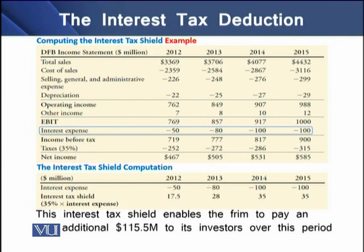On the screen, we have an illustration showing the income statement of firm DFB from 2012 to 2015. The statement includes total sales, cost of sales, selling and general expenses, and depreciation, resulting in operating income. Adding other income to operating income gives us EBIT — earnings before interest and taxes.